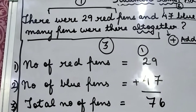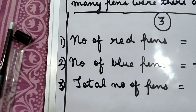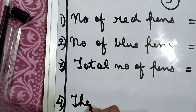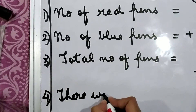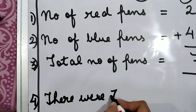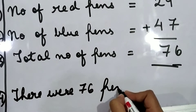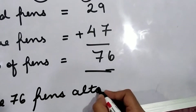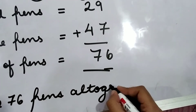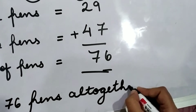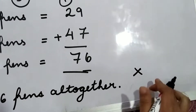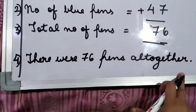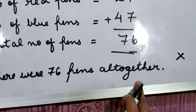But we don't come to an end by this. We have to write down the fourth statement, and the fourth statement is: there were 76 pens all together. All together is necessary, children. If you will not write all together in the fourth statement, your question will be wrong. So please make sure you write all together in the fourth statement: there were 76 pens all together.